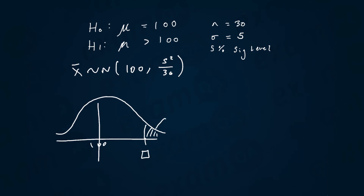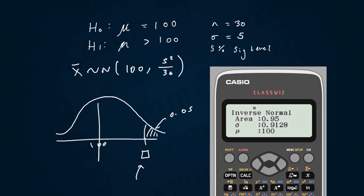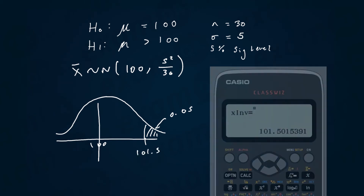The calculator works towards the left-hand side, so whatever area you input should be the area less than the value you're trying to find. That area is actually 0.95. So I'm going to put 0.95 into the calculator, with standard deviation 5 over root 30 and mean 100.